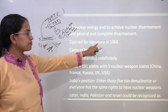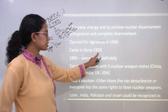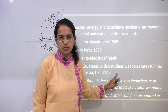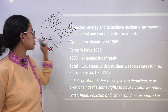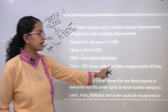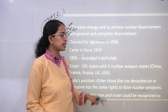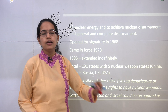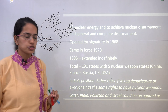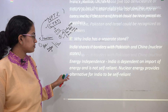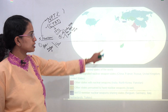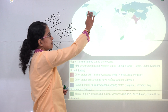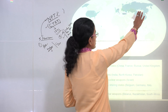The NPT prevents the spread of nuclear power, nuclear weapons, and technology to other nations. It was opened for signature in 1968, came into force in 1970, and so far has 191 members, with five nuclear weapons states that are also members of the UN Security Council: China, France, Russia, UK, and USA — which have a kind of privileged standing.